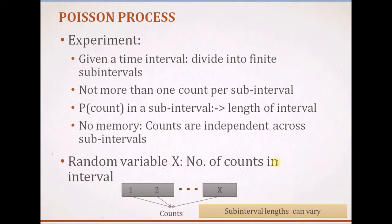We basically have a time interval in which we are trying to measure the number of events. This time interval can be divided into a finite number of sub-intervals. The main characteristic of the Poisson process is that there is very little chance of more than one event occurring in a given sub-interval. The lengths of these sub-intervals vary from each other, and the probability of an event in each sub-interval is proportional to the length of the interval.